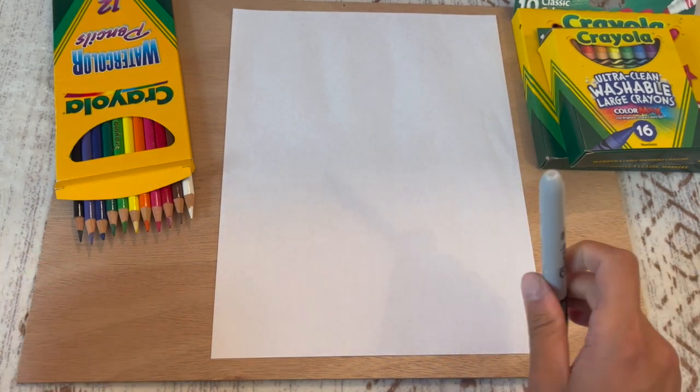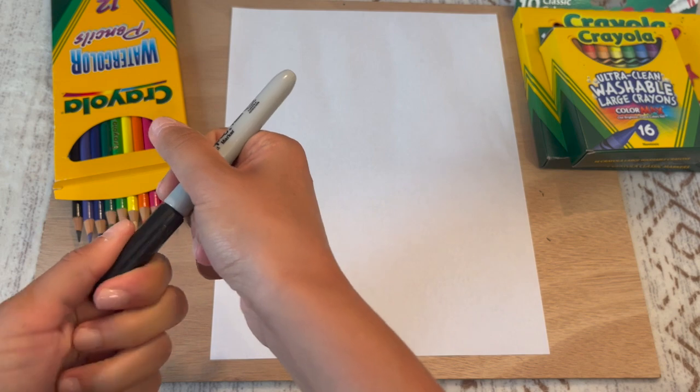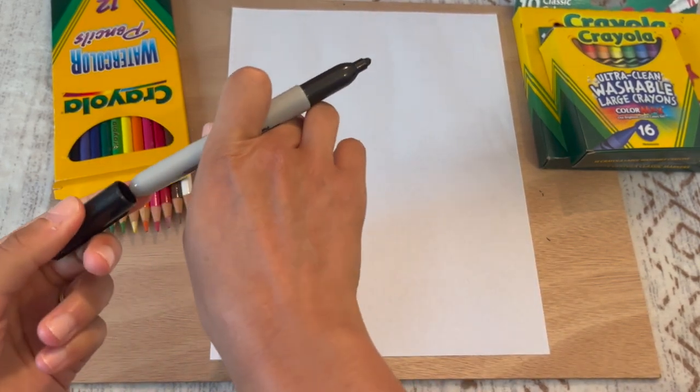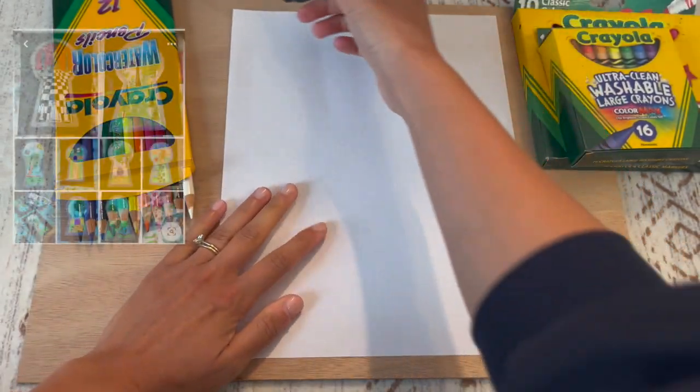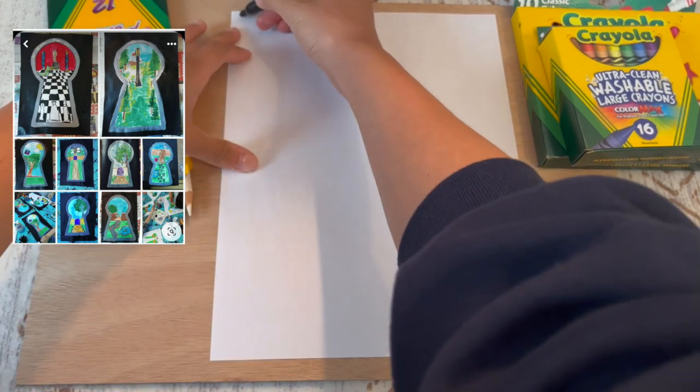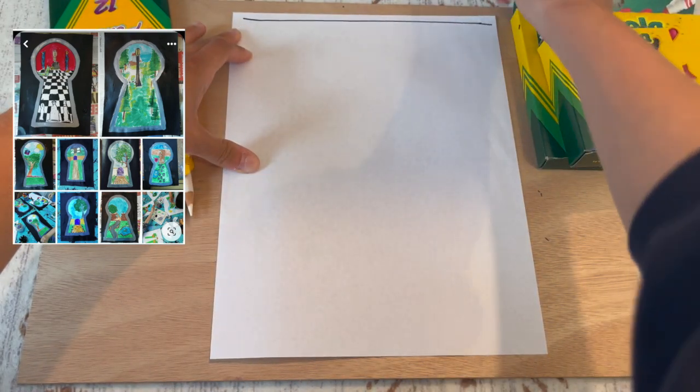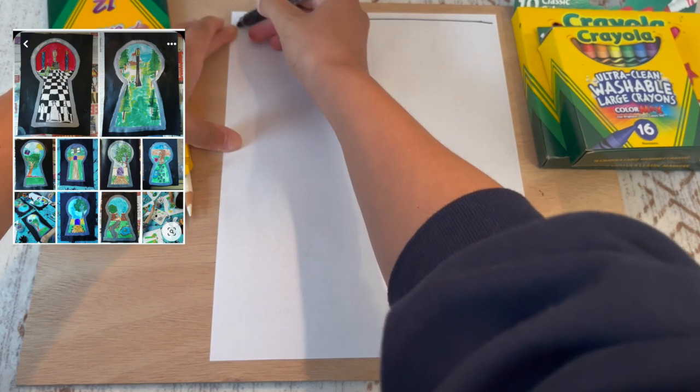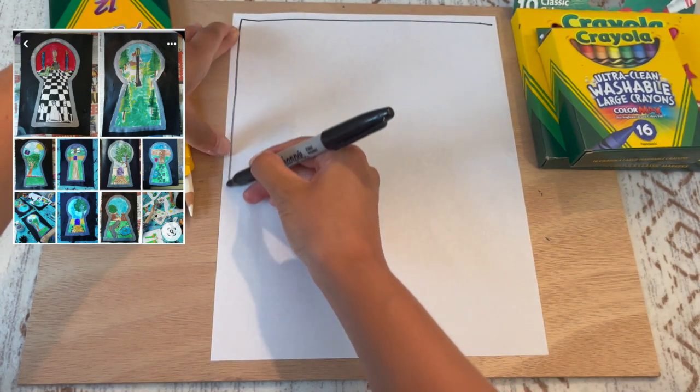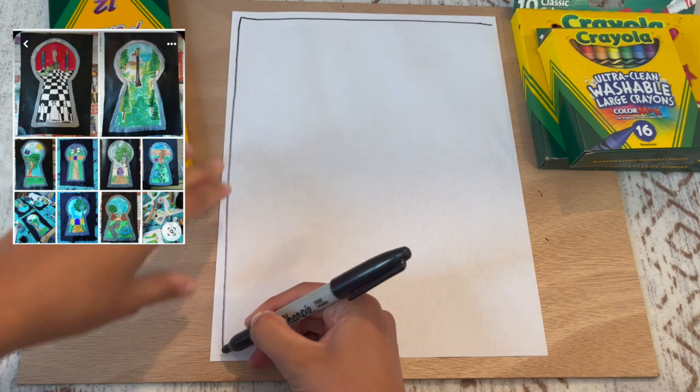So we're going to start by making our frame and a name here. You can make a straight line or a curvy line or whatever kind of frame that you want to make. And then please write your name at the bottom right of your paper.